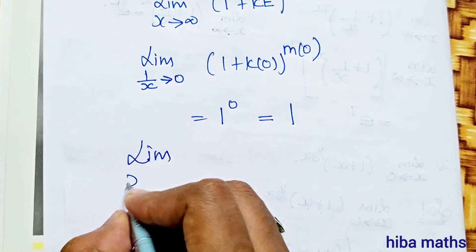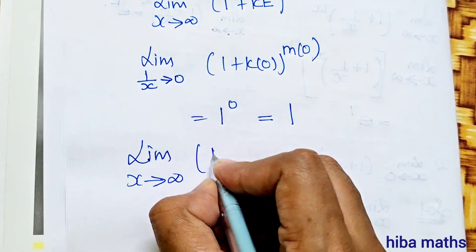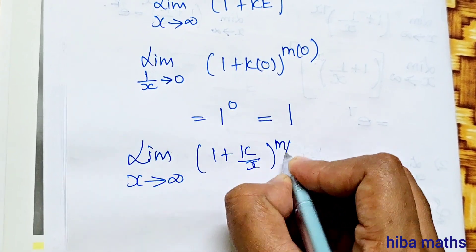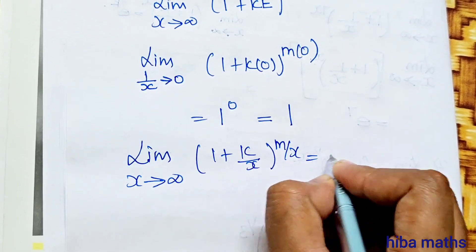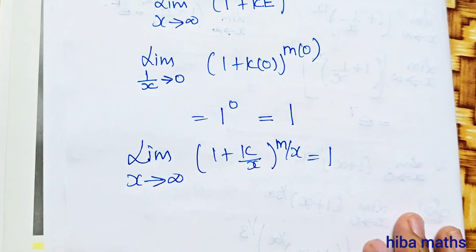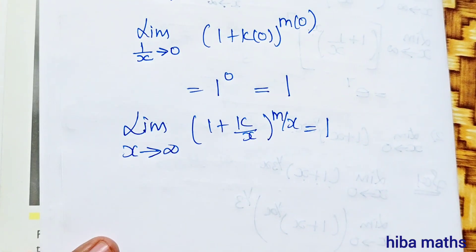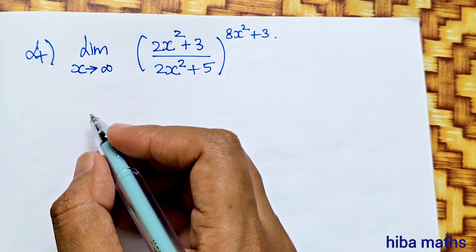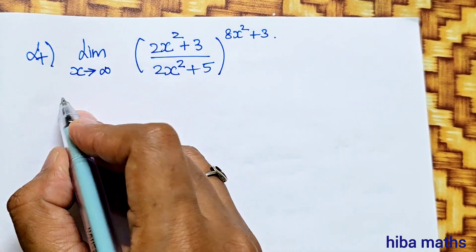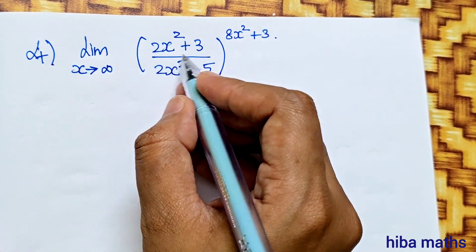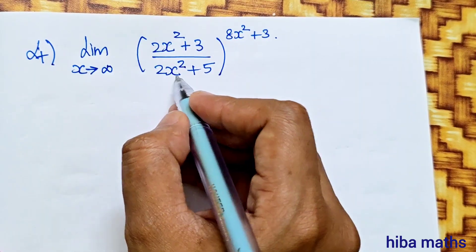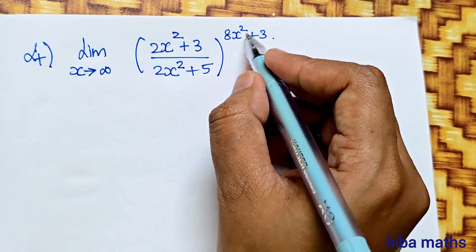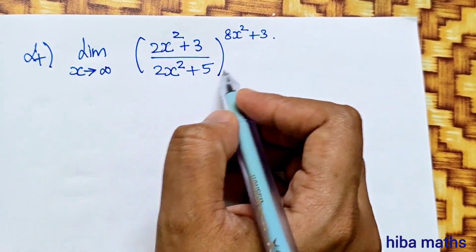So this value is 1. That is, limit x turns to infinity, 1 plus k by x, power m by x is equal to 1. That is the answer. Fourth question: Limit x turns to infinity, 2x square plus 3 divided by 2x square plus 5, whole power 8x square plus 3.